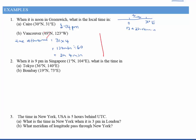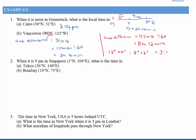For Vancouver at 123 degrees west, we subtract time since it's west of Greenwich. The time difference is 123 times 4 divided by 60, which gives 8 hours and 12 minutes. If it's noon in Greenwich, subtract 8 hours and 12 minutes — put it into your calculator and you get 3:48 am, because time has gone backwards.